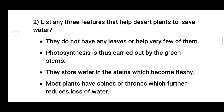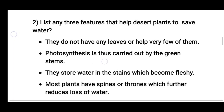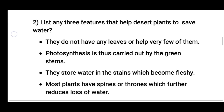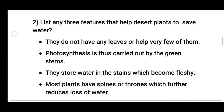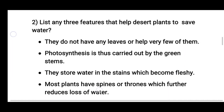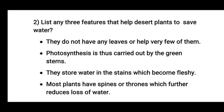So here are the three features that help desert plants to save water. First: they do not have any leaves, or very few of them. Second: photosynthesis is carried out by the green stems, and they store water in the stems which become fleshy. And the last one: most plants have spines or thorns which further reduce loss of water.